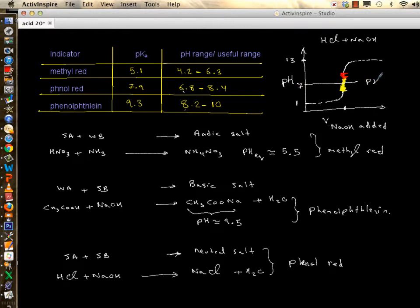This is the domain that your indicator is functioning over the vertical line. You pick and choose this indicator and then it goes from yellow to red.